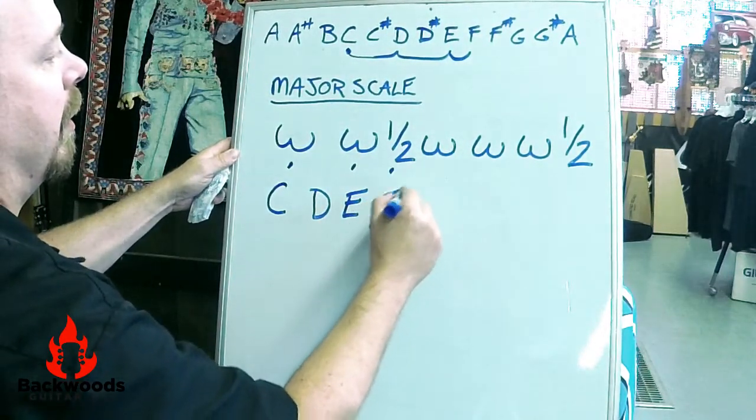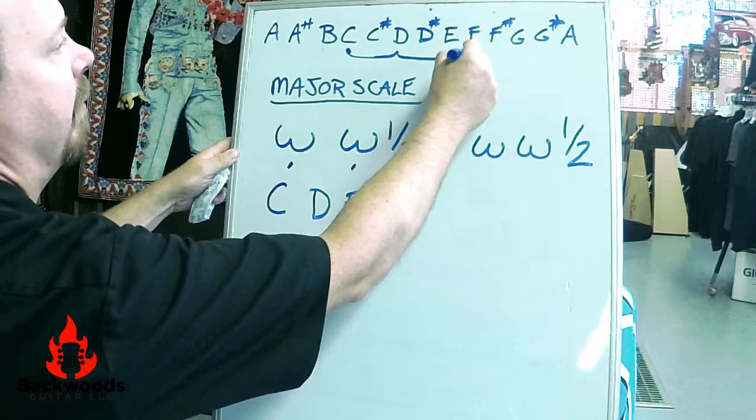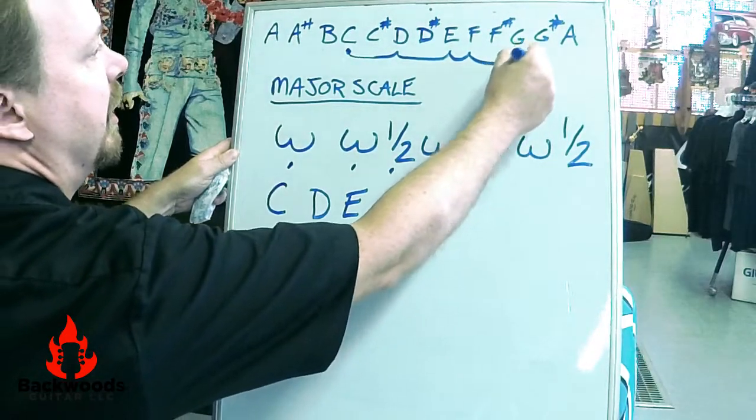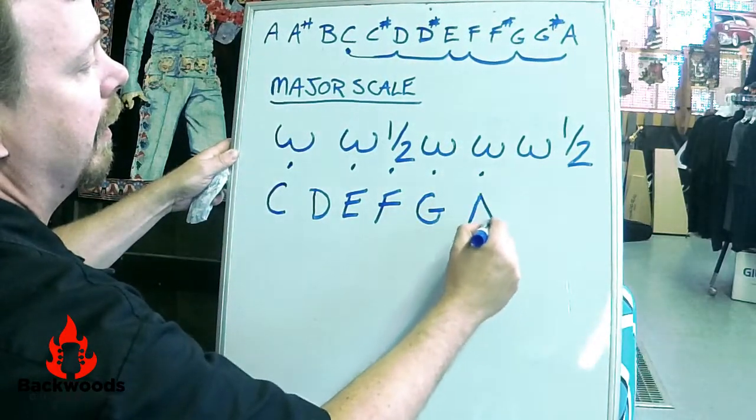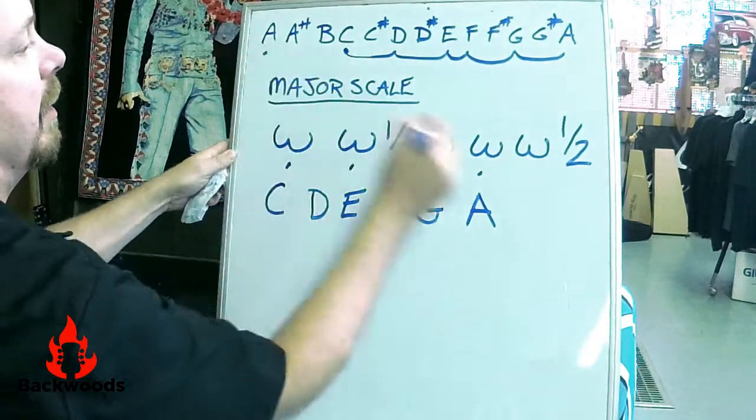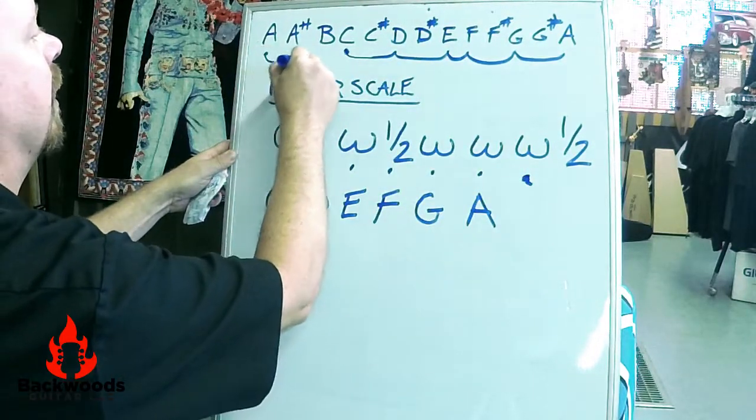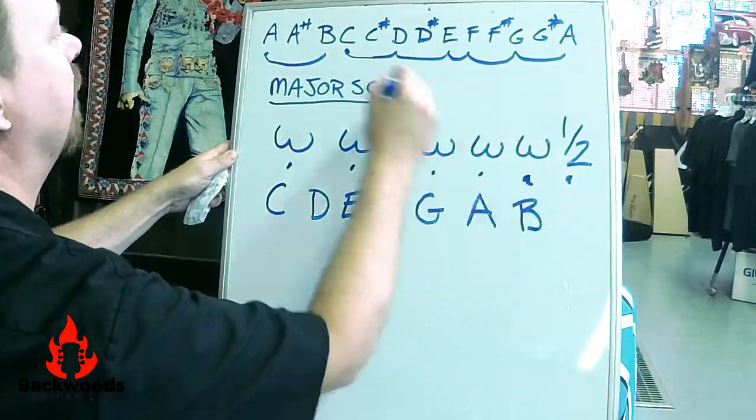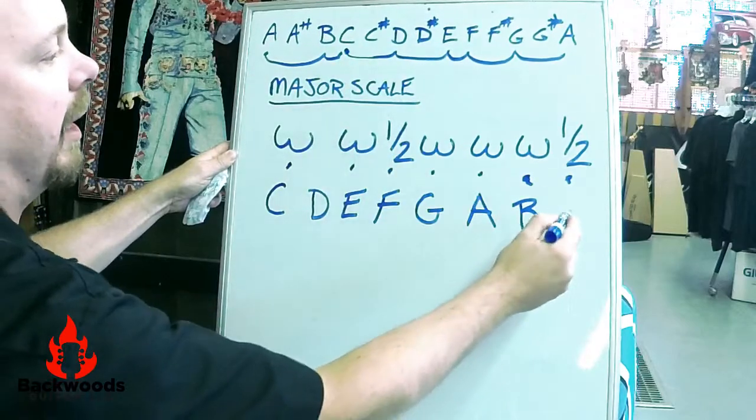Whole step from F, G, whole step from G, A. This A is what starts over here, right, so we're here. Whole step A gives you B and then half step from B puts you right back at C. Perfect.